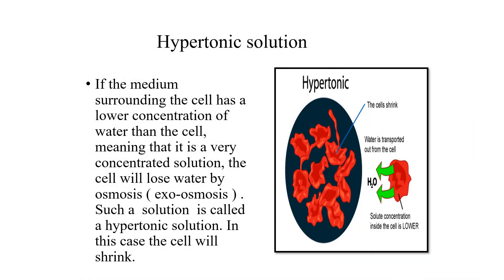Hypertonic solution. From the term, you can understand that inside the cell there is more water, but outside the cell the water concentration is less. Because of that, from inside, the water comes out. For example, if you put dry raisins in a salt solution, the outside concentration of molecules is more but water is less, while inside the cell water is more. Therefore, water from the cell comes out — that is called exosmosis. Shrinkage takes place.